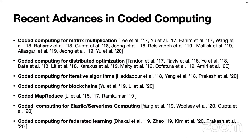The idea of coded computing has generated lots of exciting research in the recent five years. One direction studied extensively is coded computing for matrix multiplication, which is what we talk about today. But there are other applications such as distributed optimization, iterative algorithms like finding a fixed point, and systems such as blockchain systems, MapReduce Framework, Elastic Computing Systems, and Federated Learning Systems.